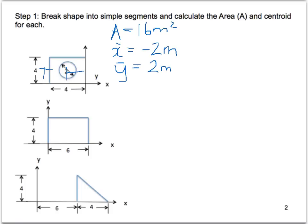Now the circle, the area is going to be pi, which would just be 3.14m squared. Our Y bar is going to be the centre of the circle, which is again 2m. And the X bar will also be to the centre of the circle, which is negative 2m.